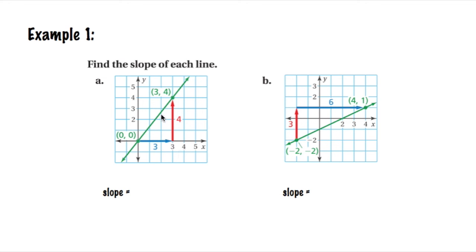So slope, change in the Y or the rise over change in X, which we call the run. Well, from this point to this point, what was the change in the Y values? Well, we went up 4. So that's going to go in our numerator. And from 0, 0 to 3, 4, what was our change in X? Well, we went over to the right 3. And that's a positive 3 when we move to the right. Just like when we go up, that's positive 4. So in this situation, our slope then is 4 thirds, 4 over 3.